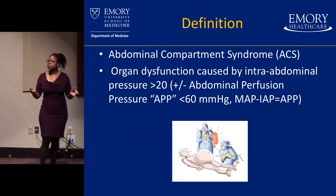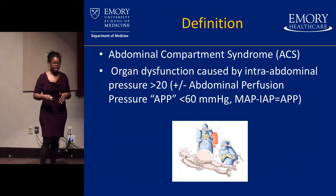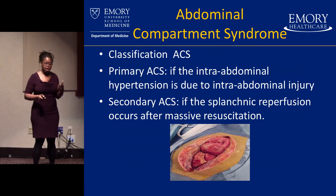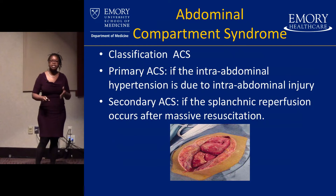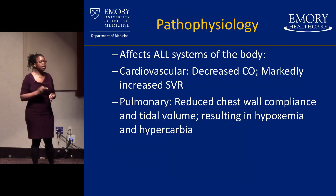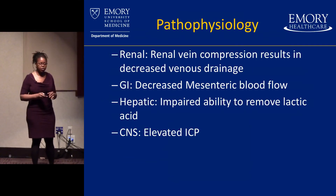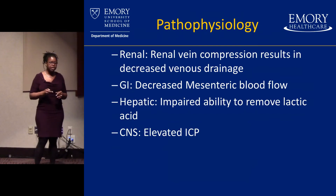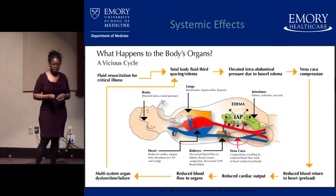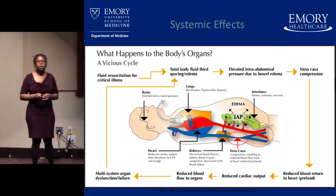Think of it like cerebral perfusion pressure: mean arterial pressure minus intra-abdominal pressure gives you abdominal perfusion pressure, and we need to perfuse our organs. We classify ACS as primary (intra-abdominal process) or secondary (from massive fluid resuscitation). This affects every system: decreased cardiac output, increased systemic vascular resistance, reduced chest wall compliance and tidal volume causing hypoxemia and hypercarbia, renal vein compression, decreased mesenteric blood flow, impaired lactic acid removal, and elevated intracranial pressures — leading to multisystem organ failure.